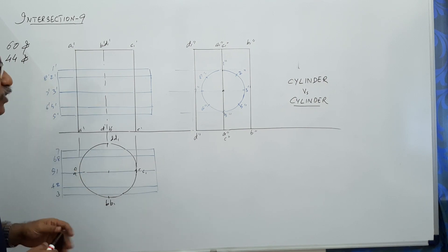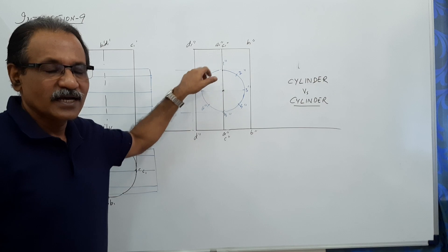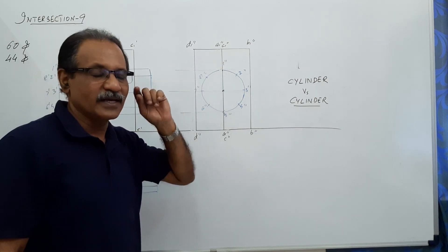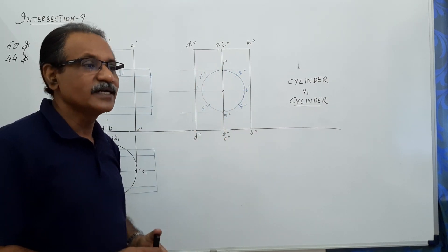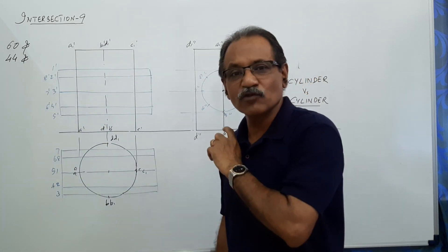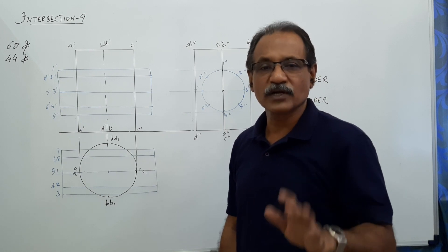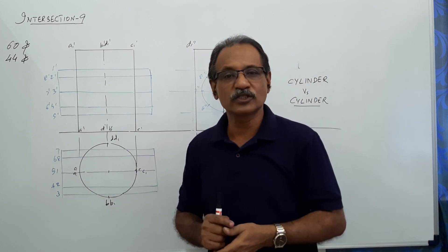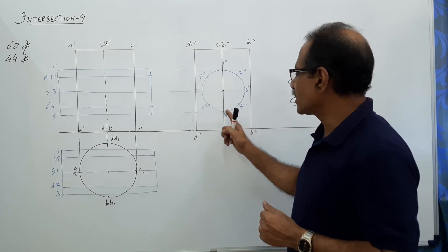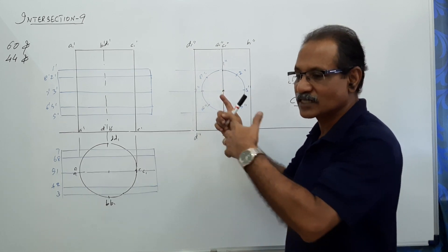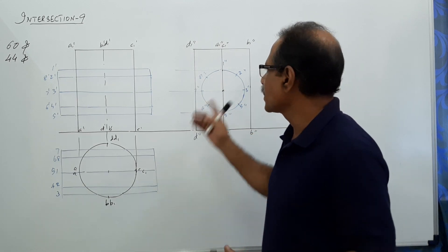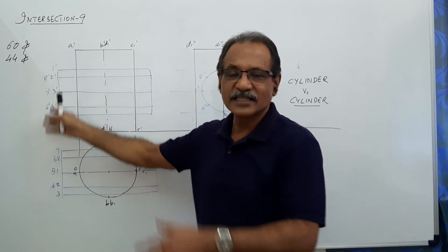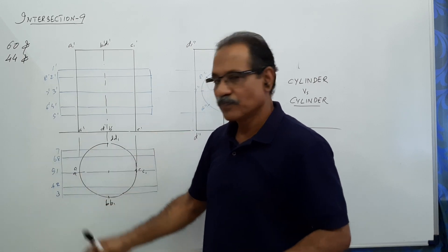I have drawn the two circles — the end view of the horizontal cylinder, its elevation, and its plan. I have taken 8 generators on the circle. It is ideal to take 12 generators, but 12 generators will confuse you without dimensions, so I have reduced it to 8. I will advise you to draw with 8 generators. Points 1'', 2'', 3'', 4'', 5'', 6'', 7'', 8'' are marked on one side. I draw horizontal lines to them and mark 1', 2', 3', 4', 5', 6', 7', 8' as generators on one side.